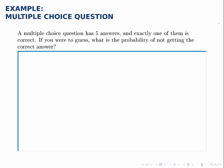This example is pretty simple, but we illustrate again how we calculate the probability that something doesn't occur. So the probability you don't get the correct answer is one minus the probability that you get a correct answer.